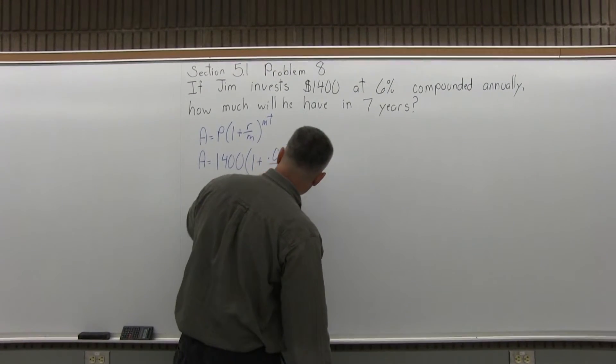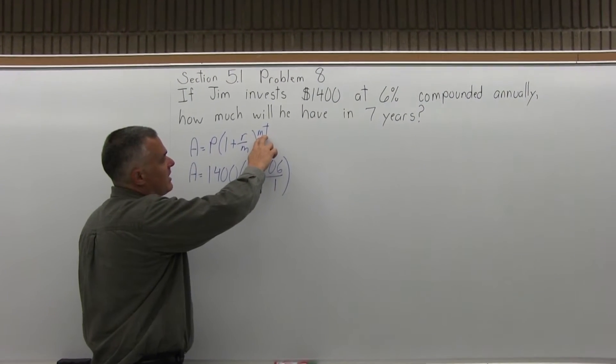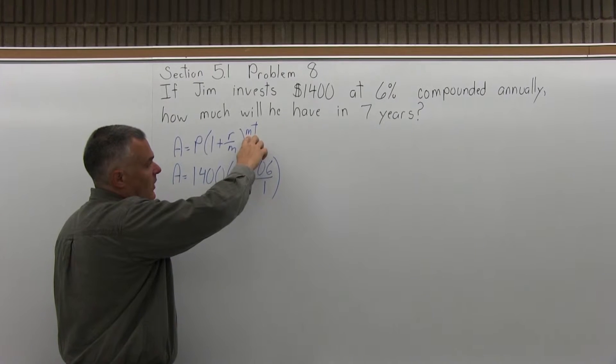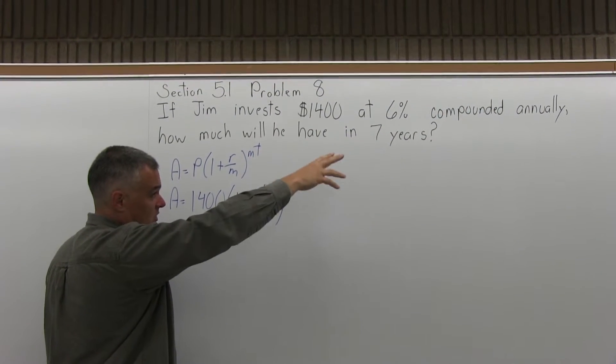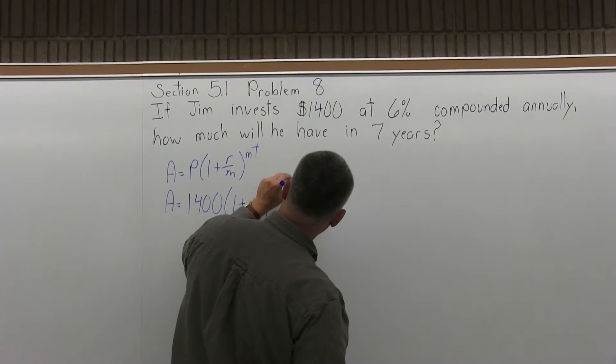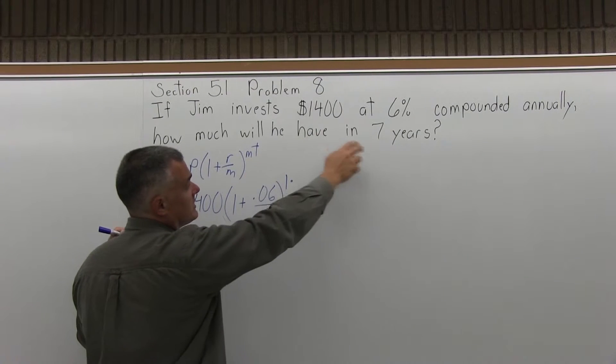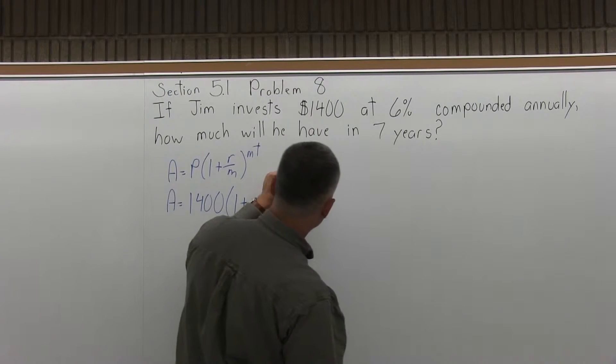I close the parentheses, and the exponent is M times T. M, again, is 1 for the annual compounding, times T is 7, because the problem says 7 years. T is the amount of time in years.